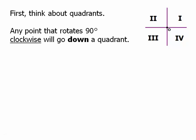First think about quadrants. Any point that rotates 90 degrees clockwise will go down a quadrant. If it's in quadrant 4 it will go to 3. From 3 it will go to 2. From 2 it will go to 1. From 1 it will go to 4. That's the clockwise direction. 4 to 3 to 2 to 1 back to 4.